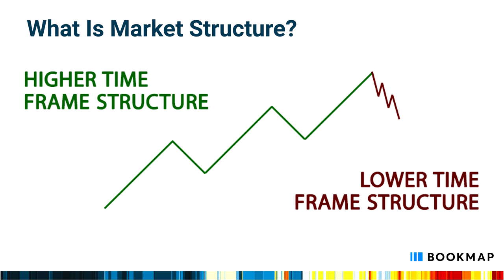First, a note on the fractal nature of market structure. There are often different structures in play across different timeframes. For example, while the overall market structure on the higher timeframe may be trending up, the lower timeframe structure may be in a current downtrend, as the market pulls back and awaits an influx of buyers to continue the higher timeframe move.